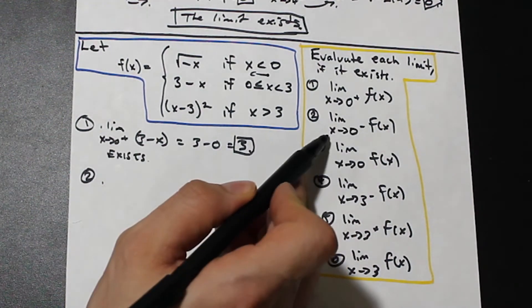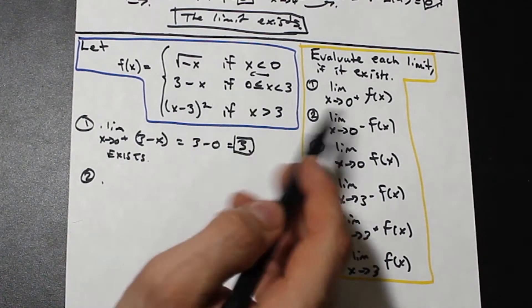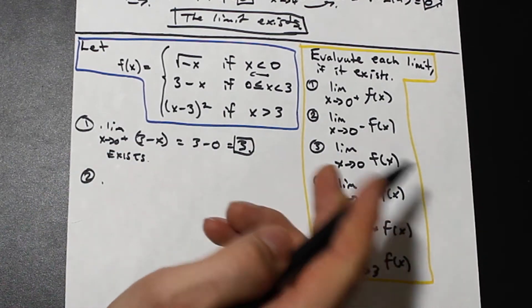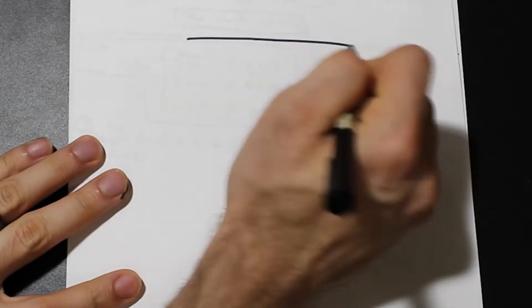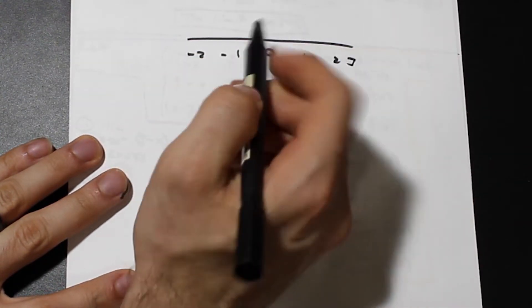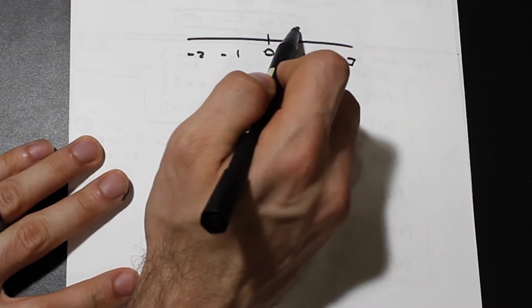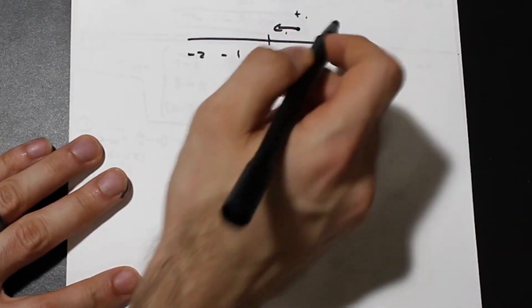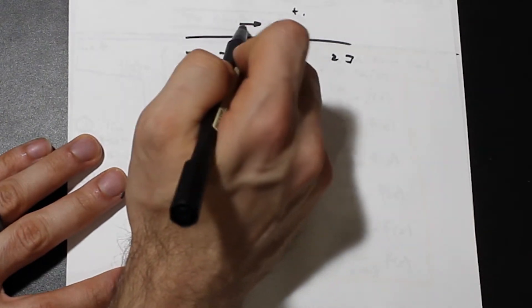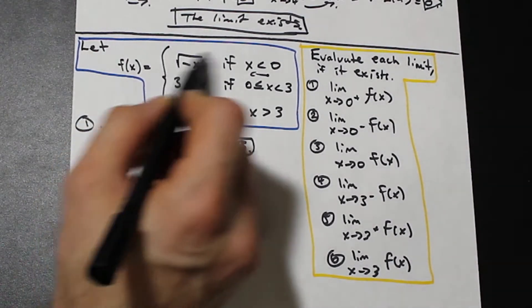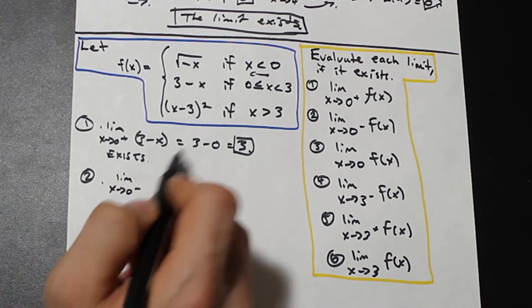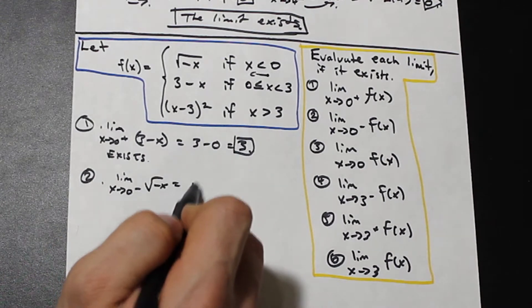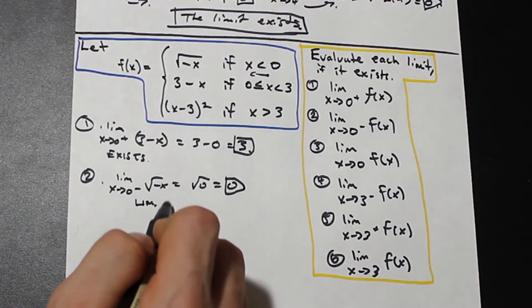Question 2 is the limit as x approaches 0 from the left. When x is less than 0, the relevant function is root(-x). If it helps, draw a number line: if you're to the right of 0 and moving toward it, that's from the right; if you're to the left of 0 and moving toward it, that's from the left. So the limit as x approaches 0 from the left of root(-x) — plugging in 0, root(0) equals 0. This limit exists.